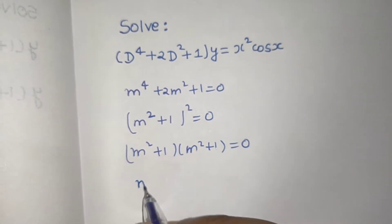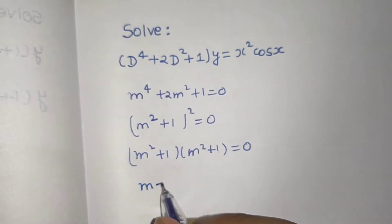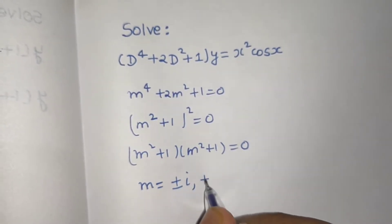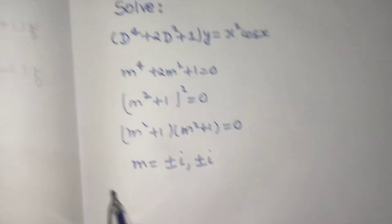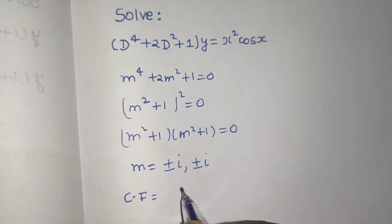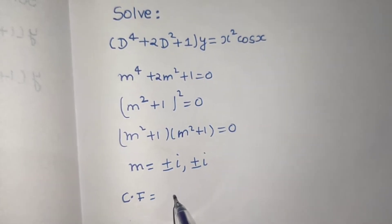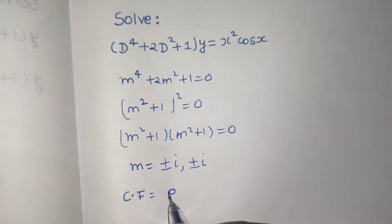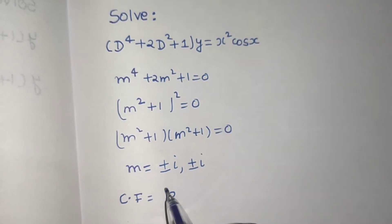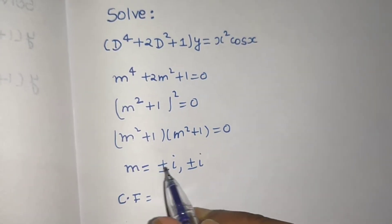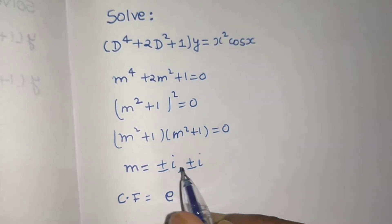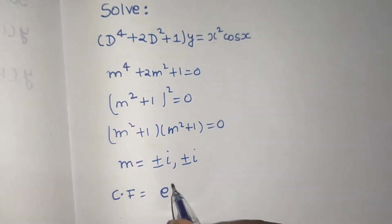From here, we get m = ±i, repeated twice. In the case where complex roots are repeated, we write the complementary function as e^(ax), where a = 0 and b = ±1·i in both cases, so a = 0 ± 1·i.